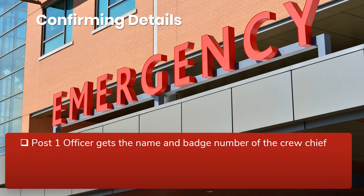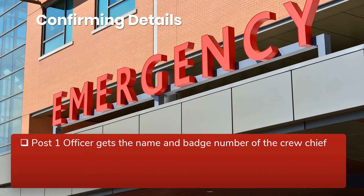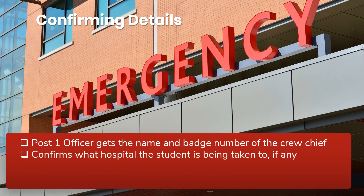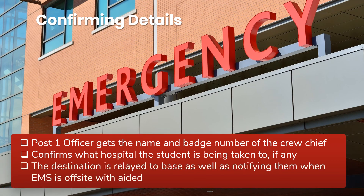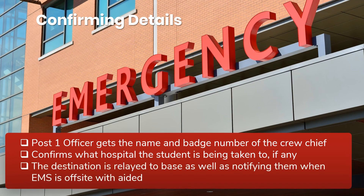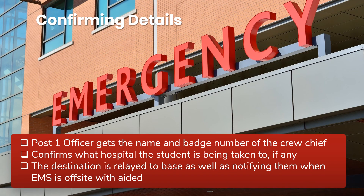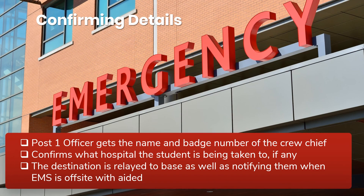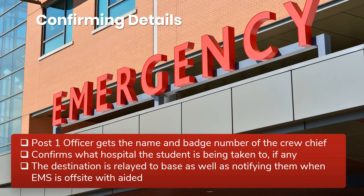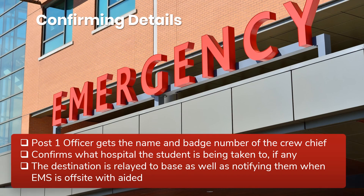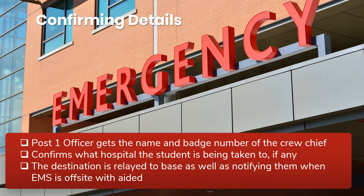Confirming Details: Post One Officer gets the name and badge number of the EMS crew chief and confirms what hospital the student is being taken to, if any. The destination is relayed to base, along with notification when EMS is off-site with the aided. Confirmation and documentation of information such as the crew chief's badge number and the hospital destination are necessary so relevant parties know the location and disposition of the aided.